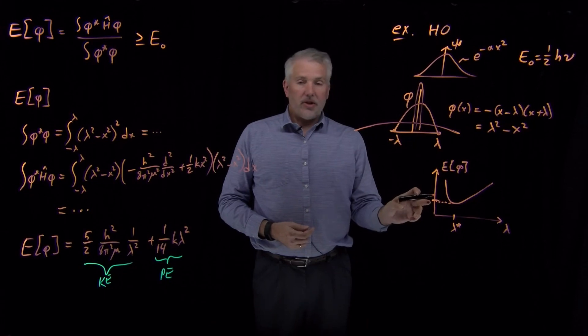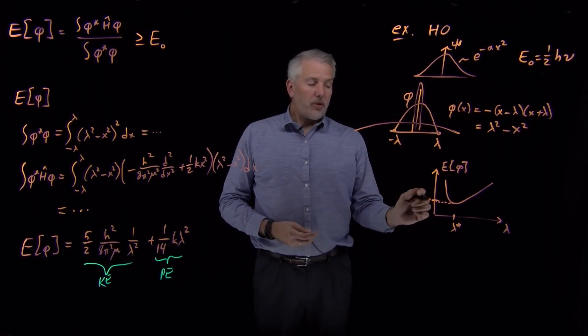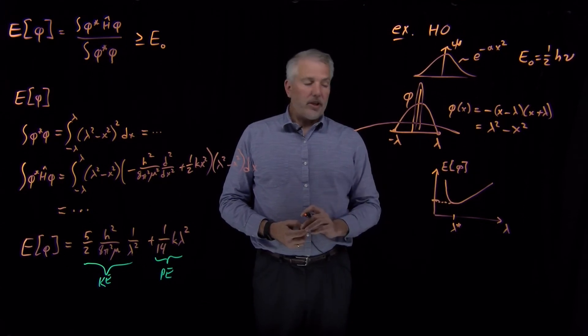So the value of lambda that we can plug in to give us the lowest possible variational energy is not guaranteed to be the same as the ground state energy of the true wave function, but it's at least going to be an upper bound on that true variational energy.